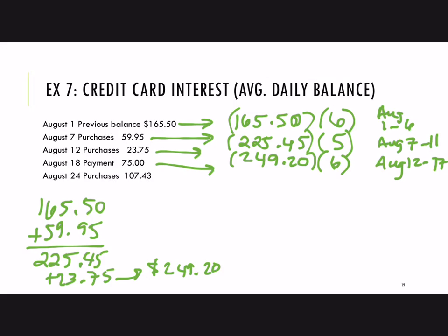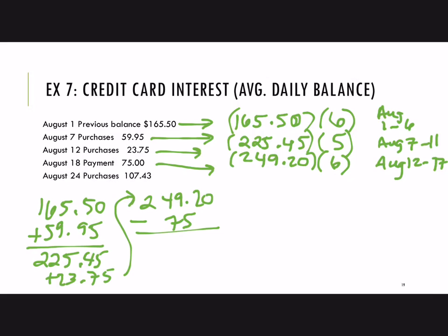Then a payment of $75 is made. So we have $249.20 and subtract the payment of $75, and that gives a balance of $174.20. That balance is carried on the card from the 18th through the 23rd — another six days.